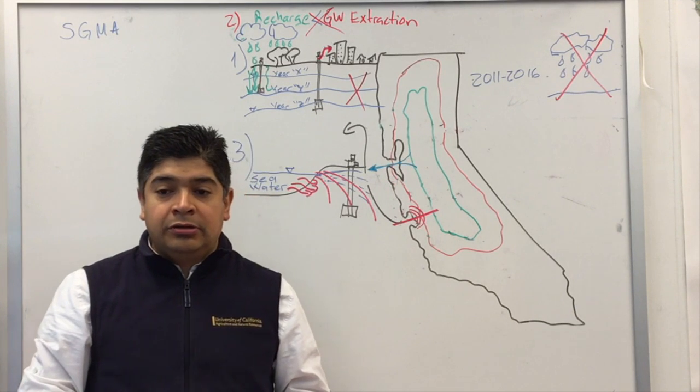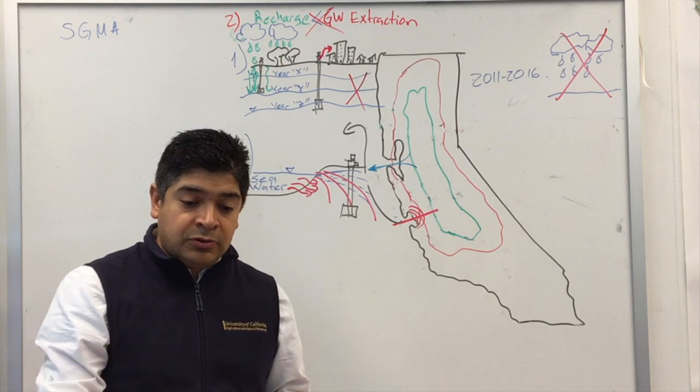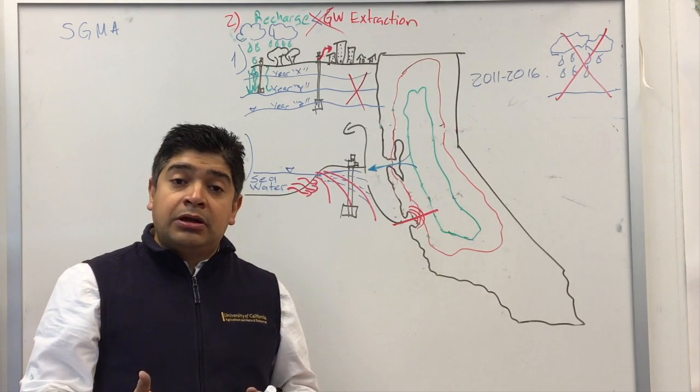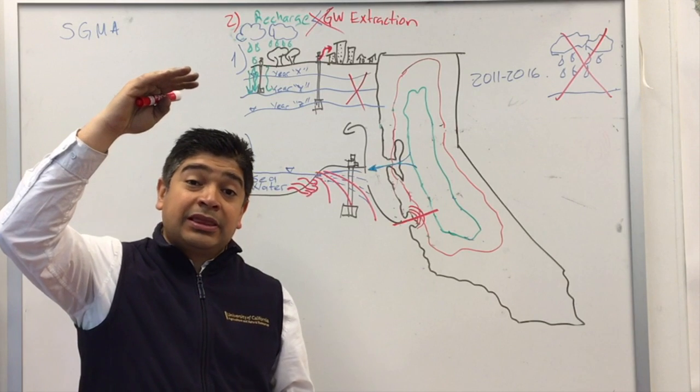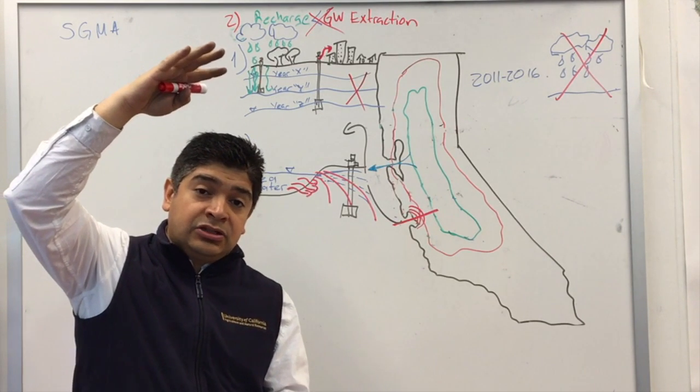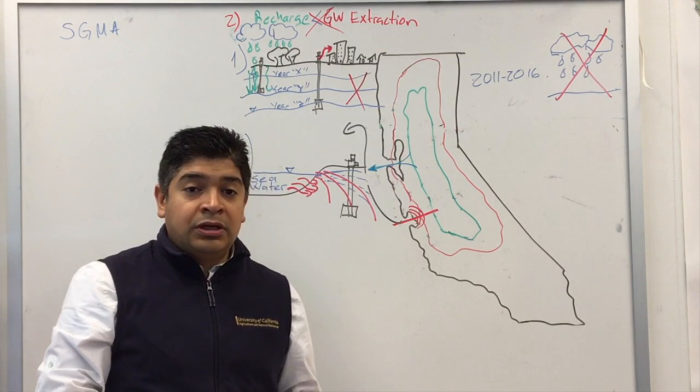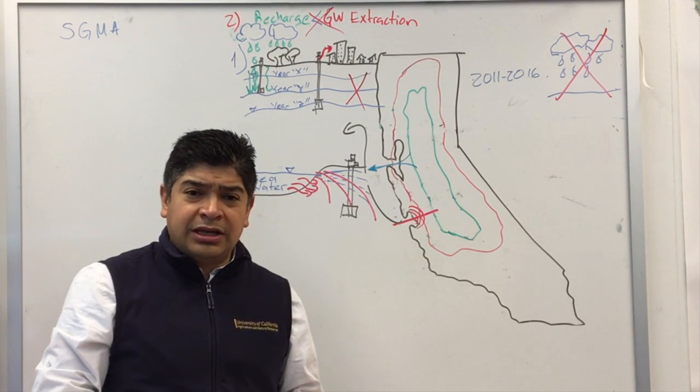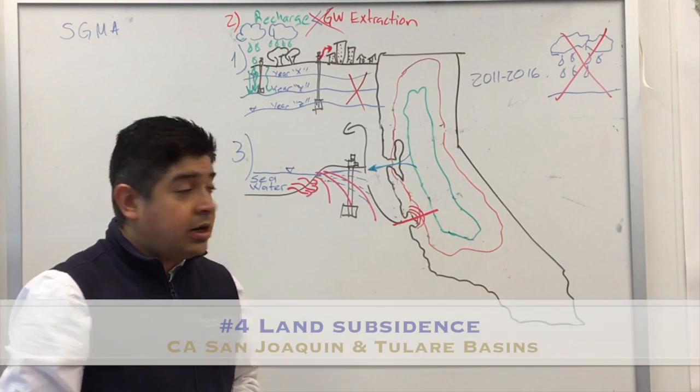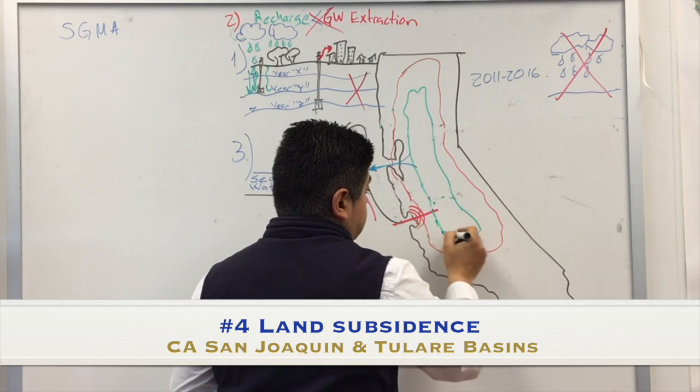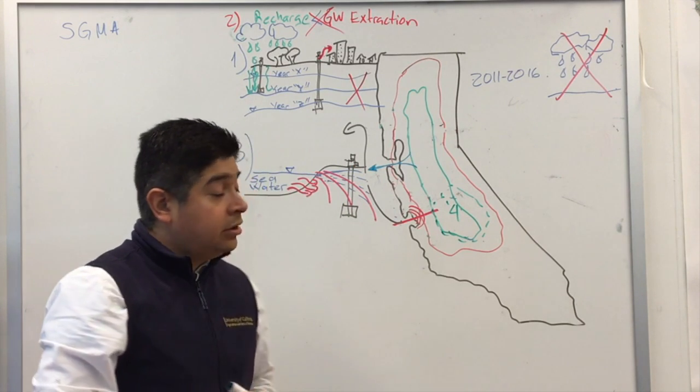Point number four, avoiding land subsidence. As we have seen, as we are extracting more water out of the ground, that water is leaving empty space. Because we have a large water column of soil that is actually quite heavy, all that weight is actually compacting all those empty spaces that are there and all that soil, provoking some land subsidence. This is mostly happening in the south part of the San Joaquin and the Tulare Basin, but it can happen in other places.